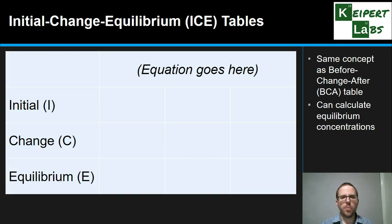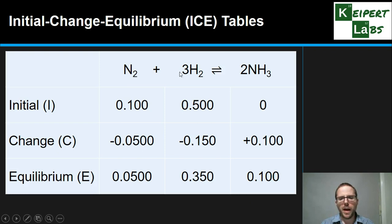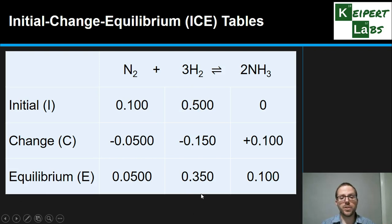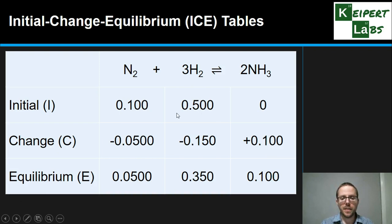We use the ICE table to organise our equilibrium concentration calculations, placing data into each cell. For example, consider nitrogen and hydrogen reacting to make ammonia, starting with 0.1 mol/L of nitrogen and 0.5 mol/L of hydrogen. We want to translate those initial values to equilibrium concentrations. In this example, we know the equilibrium concentration of ammonia — that's the measurable piece of information. Initially, we have zero product, and it has increased by 0.1 mol/L to reach equilibrium.